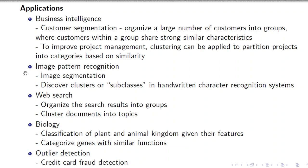Another application is outlier detection. Outliers are points that don't belong to any of the groups and are considered as noise. Unusual behavior can be detected as an outlier or noise and removed using clustering. An example of this is credit card fraud detection — if a credit card has been stolen, the unusual transaction pattern will reveal abnormal behavior and can be detected.